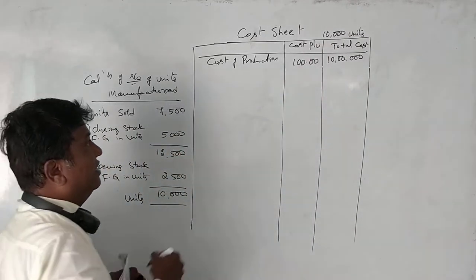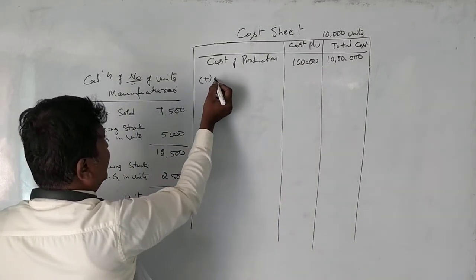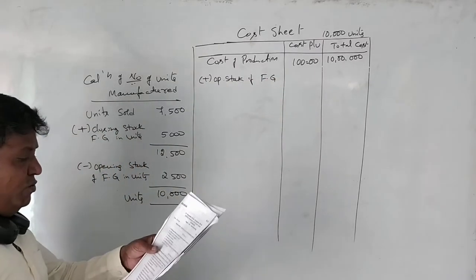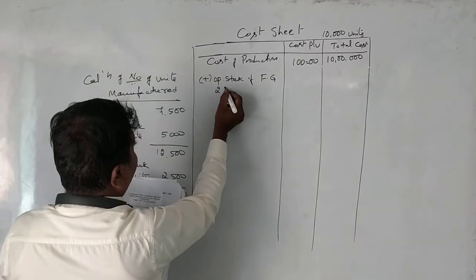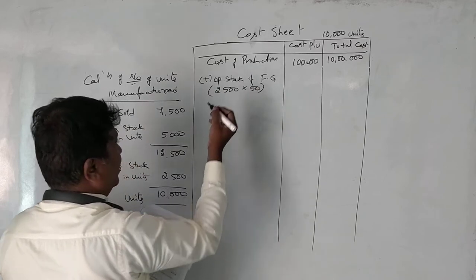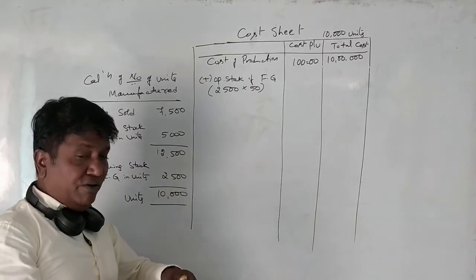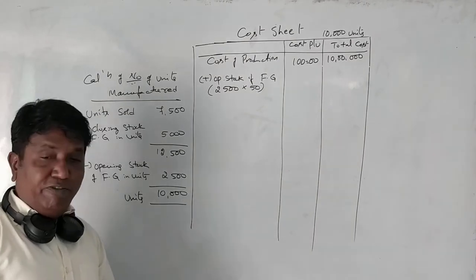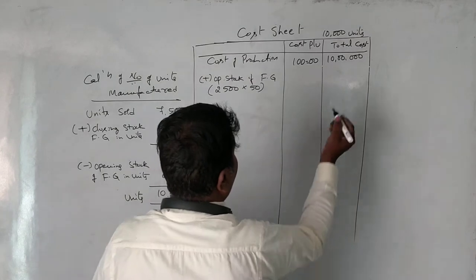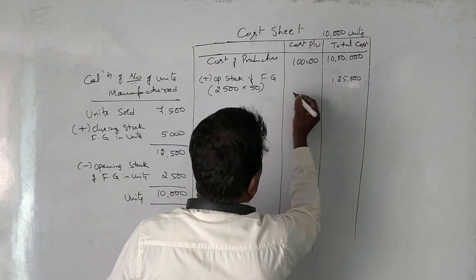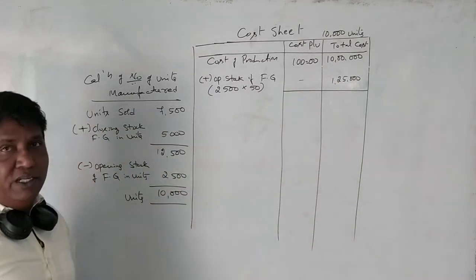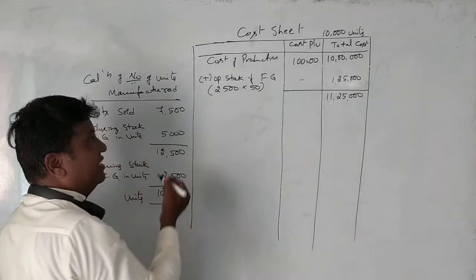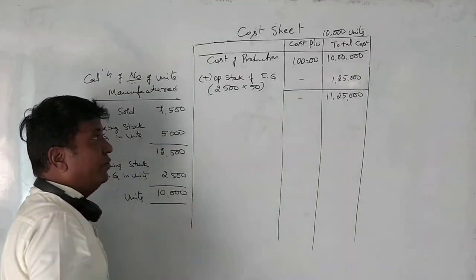So cost of production per unit is calculated as 100 rupees per unit — 10 lakhs total cost of production for 10,000 units gives 100 rupees per unit. Now we add opening stock of finished goods. Opening stock is 2,500 units at 50 rupees per unit, so that will be 1 lakh 25,000 rupees. Please don't calculate per unit for opening stock of finished goods.